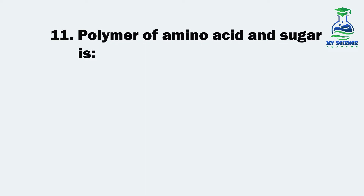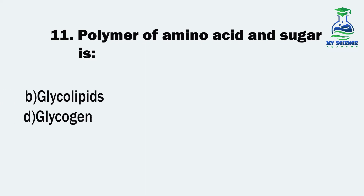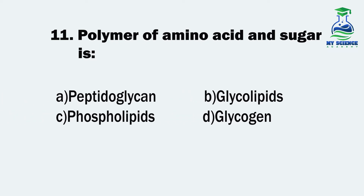Question 11. Polymer of amino acids and sugar is: A. Peptidoglycan, B. Glycolipids, C. Phospholipids, or D. Glycogen. Let us see what is the correct option.